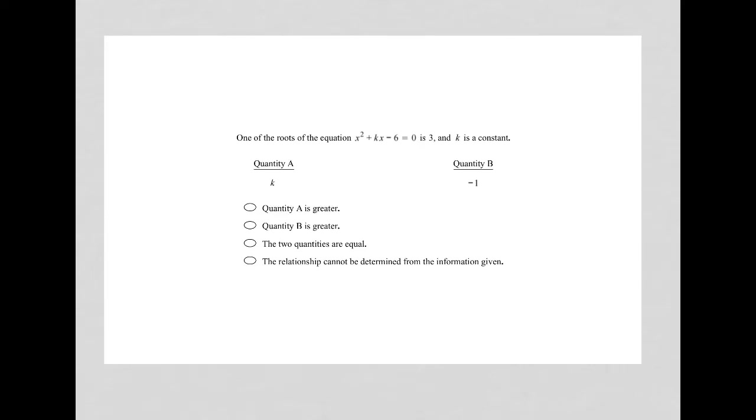So this question says one of the roots of the equation, and I'll just write this equation down, x squared plus kx minus 6 equals 0, one of the roots is 3.